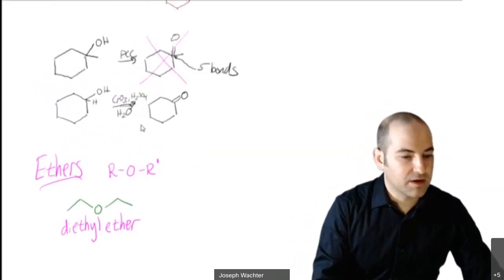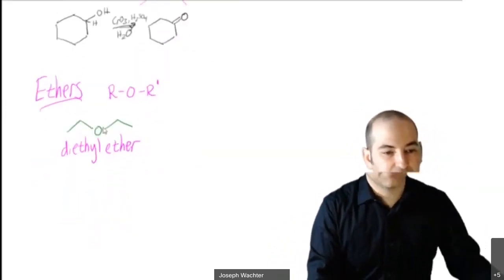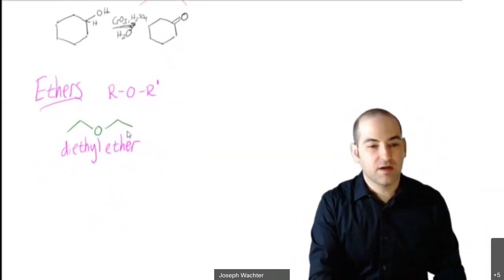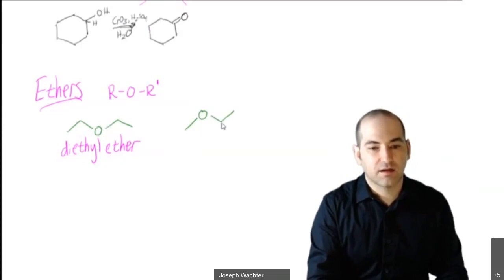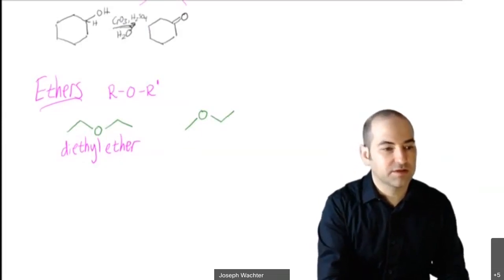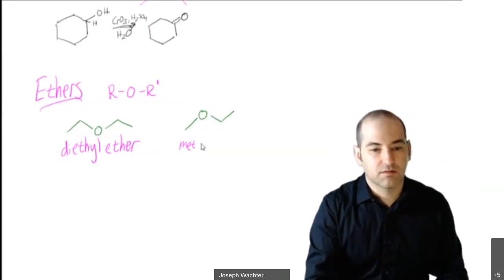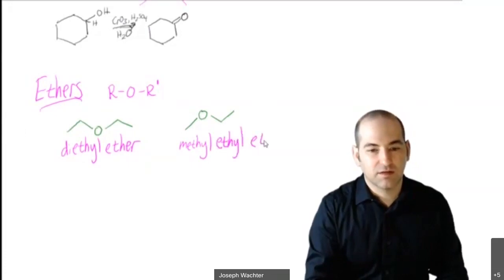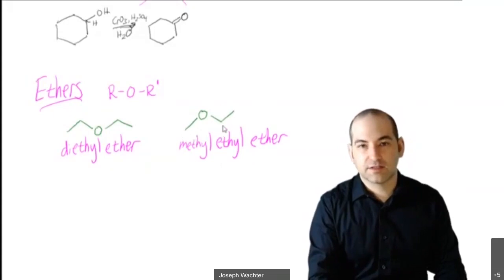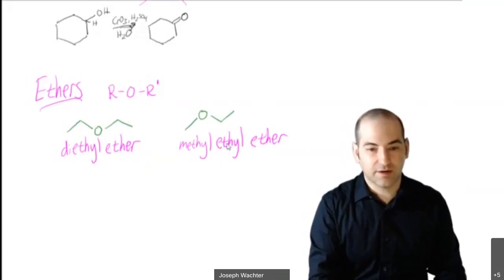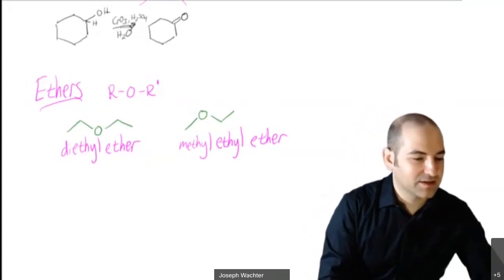When naming ethers, if the ether is the most important part of the molecule, you just say what's on each side and that becomes the name. So if we had a methyl group on one side and an ethyl group on the other, that would be methyl ethyl ether.